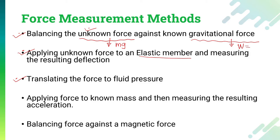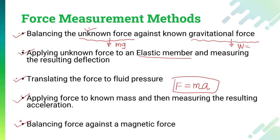The fourth way to measure force is by applying the force to a known mass and then measuring the resulting acceleration. The force is applied to the known mass — M is known — and then we measure the acceleration. Based on that, we can measure force F. The fifth way is by balancing the force against magnetic force. Such magnetic force can be generated by a magnet and current coil. Known magnetic forces are balanced against unknown forces, and we can measure those values directly.